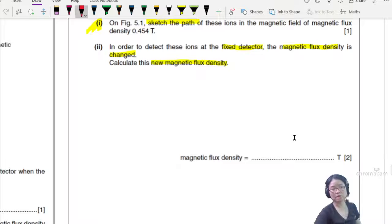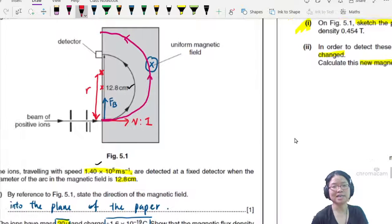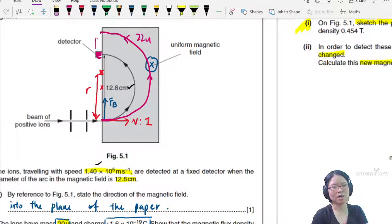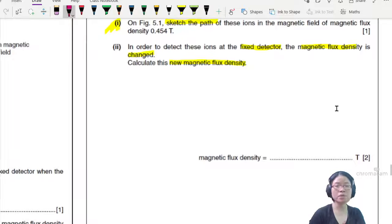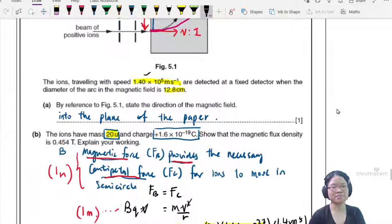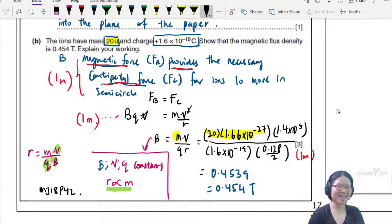Comparing to the May, June 18, the marks here are harder to get because it's an older question. So now you're asked to calculate the new magnetic flux density. If the detector cannot move, it's spoiled. I cannot move it here to detect this new path, this 22U. I need to keep it in the same place, but I still want to measure the 22U. So what I need to do is to change the magnetic field. So I'm going to go back to the same equation that we have derived here. B is MV over QR. I use this one now. B is equal to MV over QR.